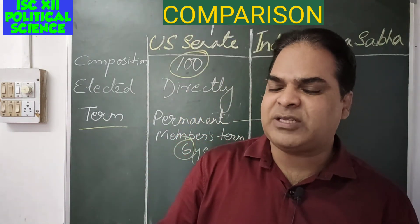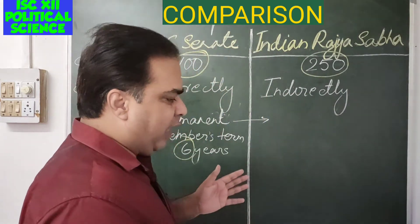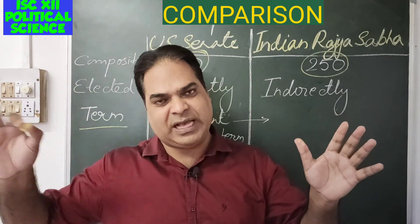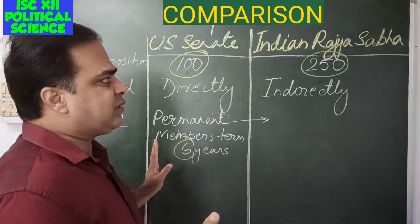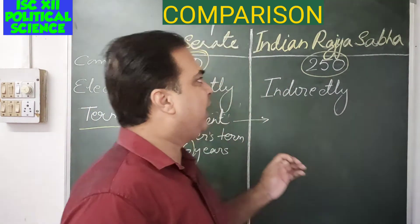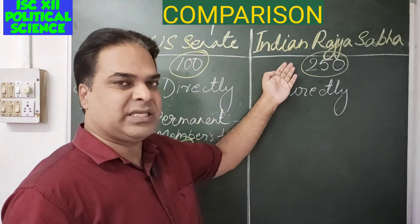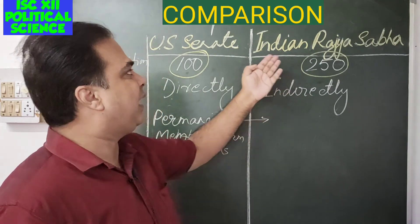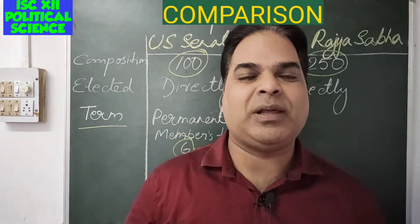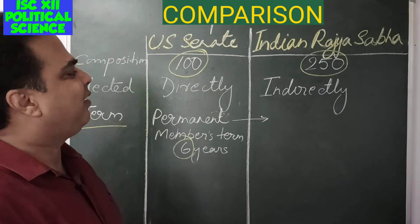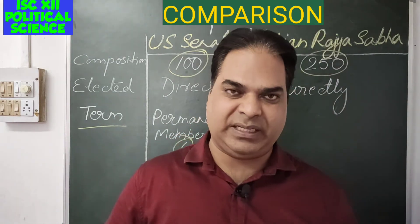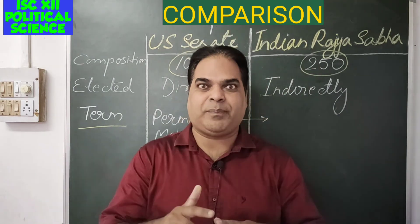In summary, as compared to Rajya Sabha, the US Senate is more powerful. In terms of ordinary bills, both Rajya Sabha and the Senate enjoy co-equal powers alongside Lok Sabha and the House of Representatives respectively. But in terms of money bills and special powers, the Senate is far more powerful. The US Senate, the upper house of US Congress, represents the states of the US federation equally. The Indian Rajya Sabha, also known as the Council of States, is the upper house of the Indian Parliament.